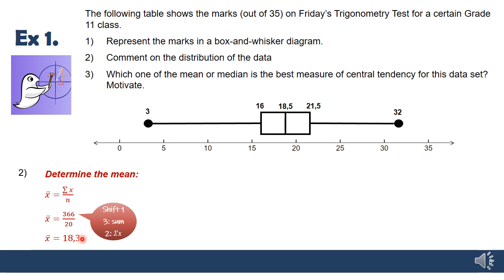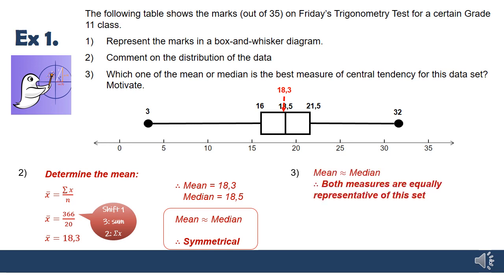Going back to our box and whisker, let's plot this mean value on our box and whisker. So on the box and whisker, 18.3 is pretty much in line with my median, 18.5. So we said that when the mean and the median are about equal, I'm going to call it equal because it's really, really close. So we have a symmetrical distribution here. Number three says which one of the mean or median is the best measure? Well, because they're pretty much equal, both of these are going to be good measures. So you could advocate that both the mean or the median are equally good indicators of this data. They equally represent the data quite well.